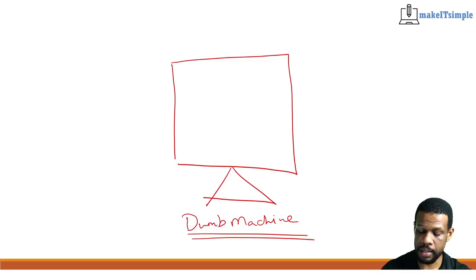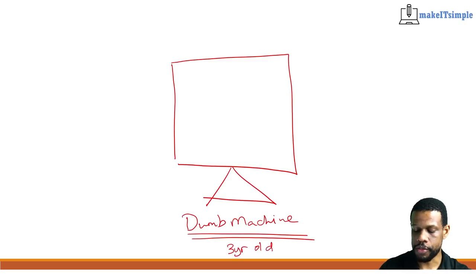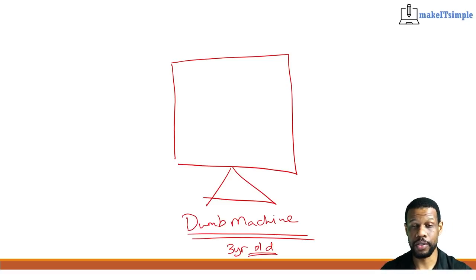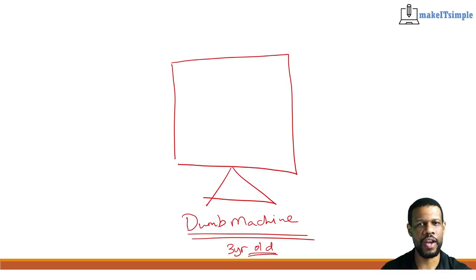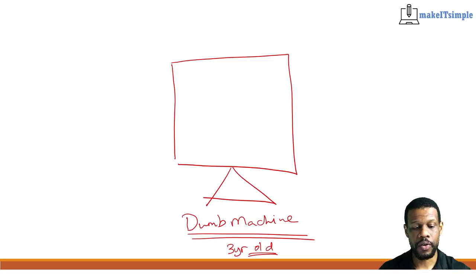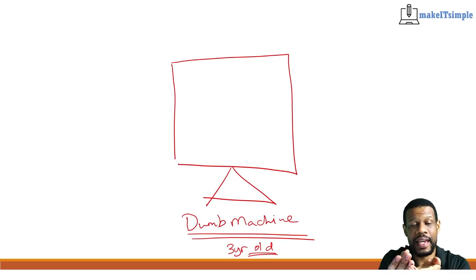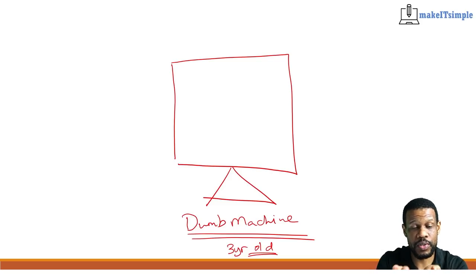Think of the computer as a dumb machine, like a three-year-old. A three-year-old is not dumb — it has the ability to follow instructions — but the instructions you give a three-year-old have to be very, very clear, or else they will do dumb stuff. If you say go to the fridge and get me water and they come back with the water in their hand, will you blame the child? No, because the child literally did what you asked — bring water — and you didn't specify how.